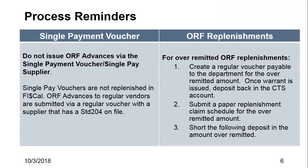For ORF replenishments — for over-remitted ORF replenishments — you have three options. One: you can create a regular voucher payable to the department for the over-remitted amount, and once the warrant is issued, deposit that back into your CTS account. Two: you can submit a paper replenishment claim schedule for the over-remitted amount. And three — Lynette has confirmed — if it's applicable, you can still short the following deposit in the over-remitted amount.